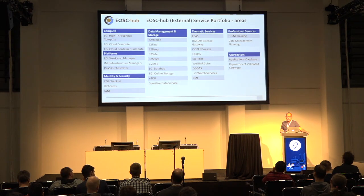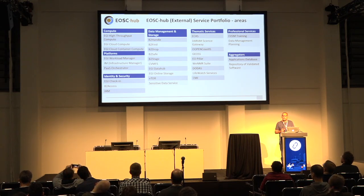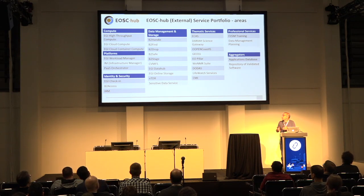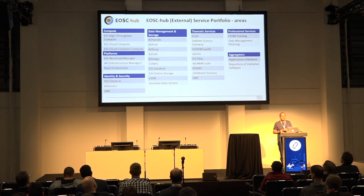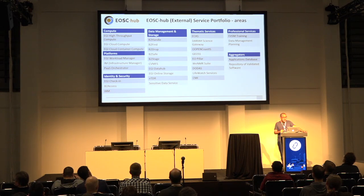The EOSC Hub services are listed and separated into several areas: compute platforms, identity and security, and data management and storage. These are the baseline services that allow research communities to build domain-specific thematic services on top. The baseline services provide raw computing and storage resources. We also have professional services — training, consultancy, and similar human-based support — and aggregators, which right now are essentially catalogs of software.